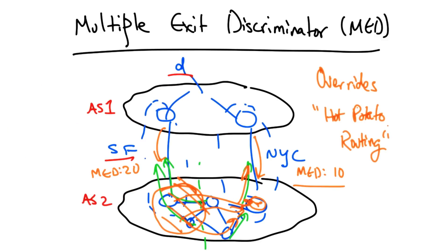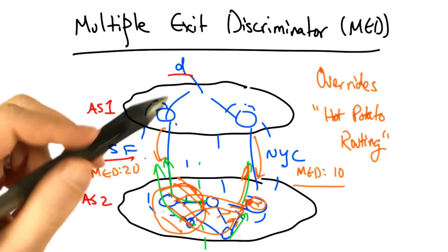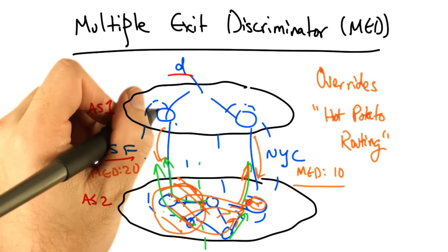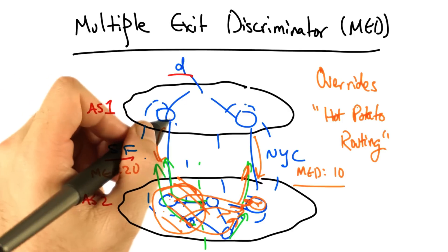Thus MED overrides hot potato routing behavior, allowing an AS to explicitly specify that it wants another neighboring AS to carry the traffic on its own backbone network, rather than dumping the traffic at the closest egress and forcing traffic across the neighbor's backbone.